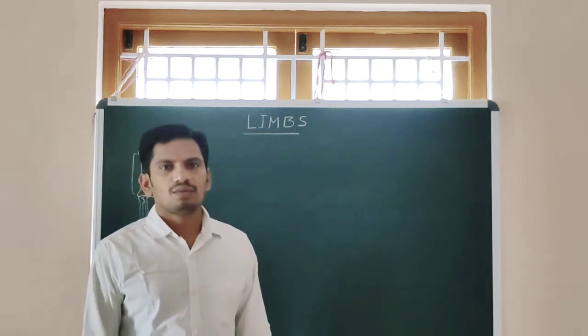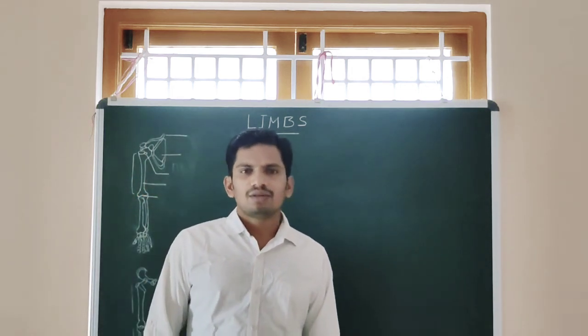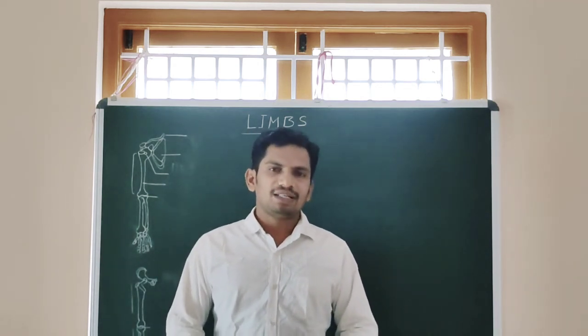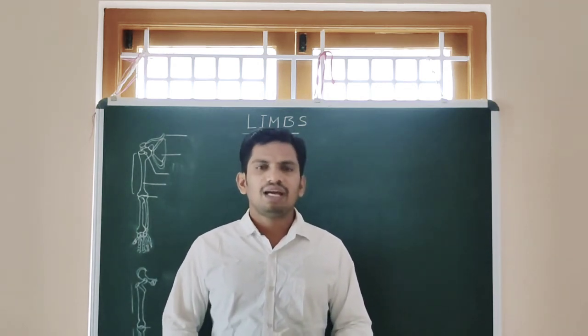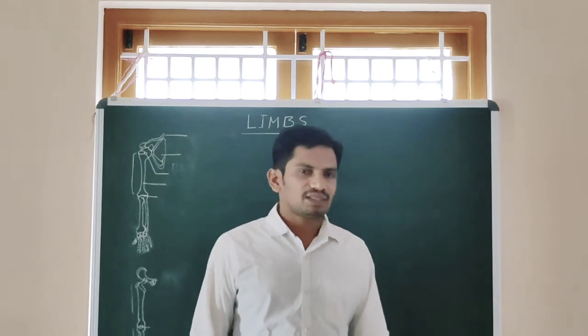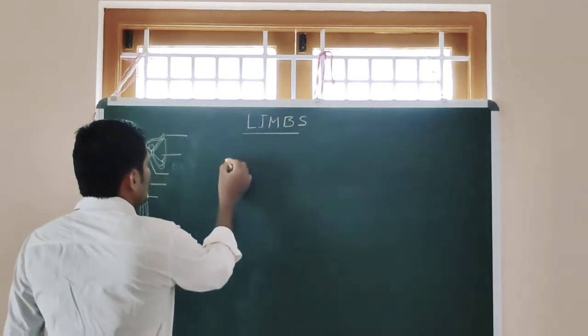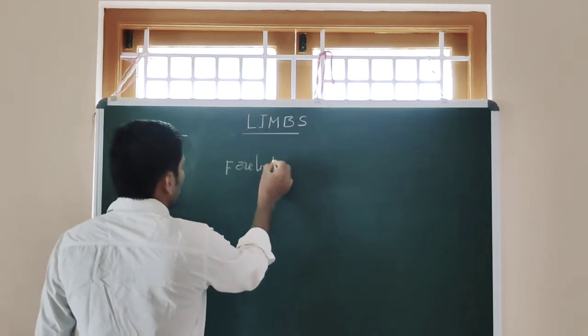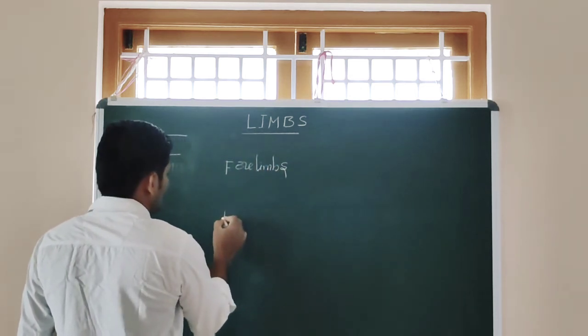Today's topic is human limbs, which comes under the appendicular skeletal system. We have two pairs of limbs: the forelimbs and hindlimbs.